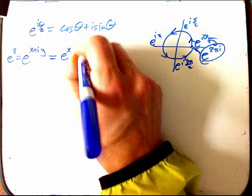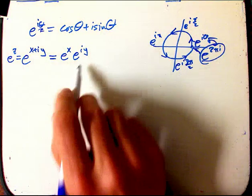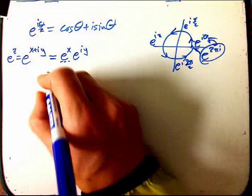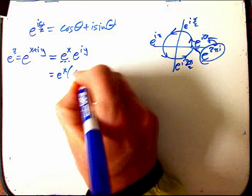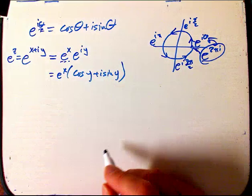So, just rules of exponents. e to the x, totally ordinary real number. e to the i y, of course, cosine y plus i sine y.